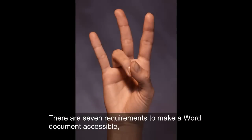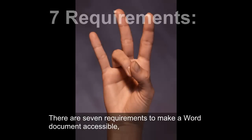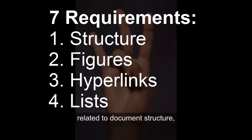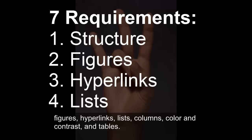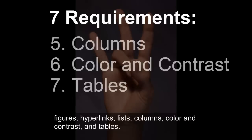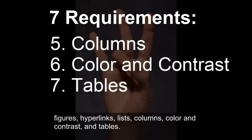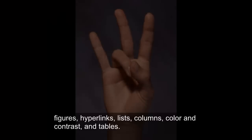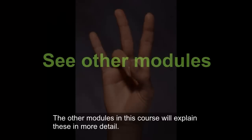There are seven requirements to make a Word document accessible, related to document structure, figures, hyperlinks, lists, columns, color and contrast, and tables. The other modules in this course will explain these in more detail.